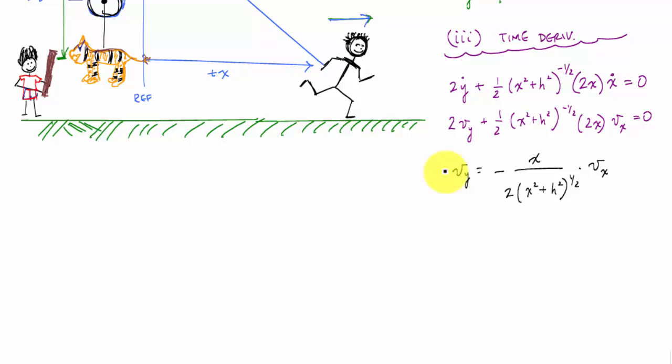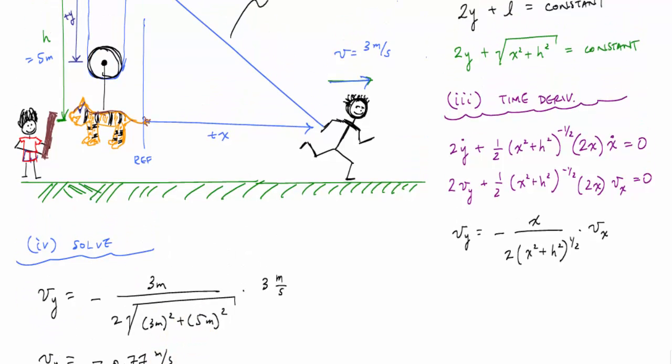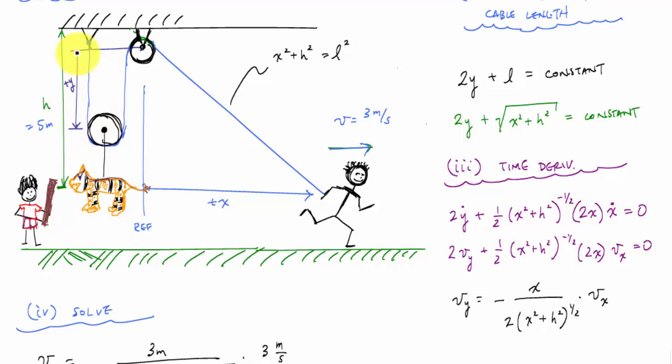And now vy, if I solve, plugging and chugging, I would get vy is negative times three meters per second. And this would tell me that the velocity of the pinata is negative 0.77 meters per second.